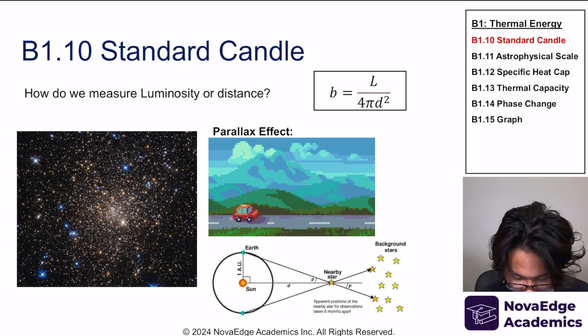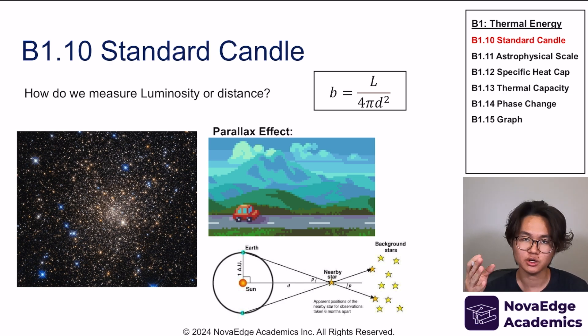Now I'm going to talk about something called the standard candle. The question becomes how do we measure luminosity or distance? When I look at the sun, how am I supposed to know the temperature of the sun? How am I supposed to know how far away the sun is? Without these things I can't calculate the luminosity or the distance. So how do we do it? First, let me answer the question of distance. We use something called the parallax effect. The parallax effect essentially is—when you're traveling in a car, the foreground, these small hills, they pass by really fast because they're really close.